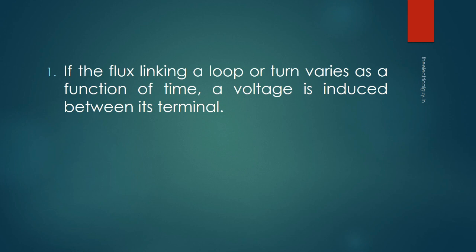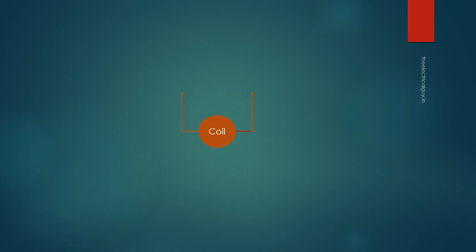This means that, let's say if you have a coil, a copper coil, which is surrounded with flux, and if you vary the flux which are linking to that coil, a voltage will get induced across the terminal of that coil.